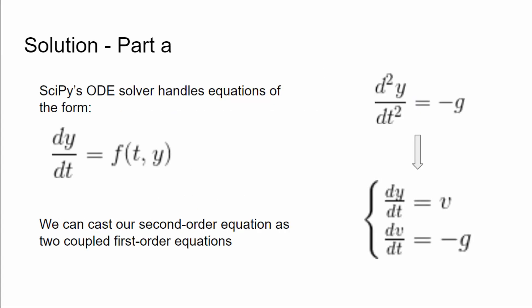SciPy has a solver called solve_ivp — solve initial value problems — and it takes equations of the form dy/dt equals some function of t and y. It solves first-order differential equations. Our equation is second order: d²y/dt² equals minus g, but we can recast that into two first-order equations. This is a common technique — you can solve higher-order equations with a first-order solver by recasting them as a system of first-order equations.